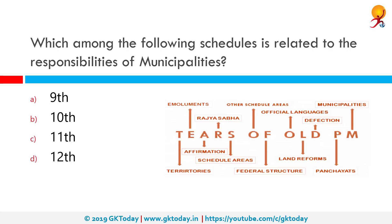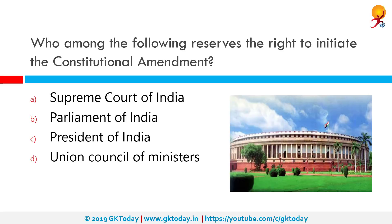Which among the following schedules is related to the responsibilities of municipalities? If you see the image on your right-hand side, it shows a shortcut way of memorizing what each schedule stands for. There are 12 schedules in the Indian Constitution, summarized by the mnemonic 'Tiers of Old PM' — each letter represents what each schedule covers. The 12th schedule, represented by 'M', stands for municipalities, so the correct answer is the 12th schedule.